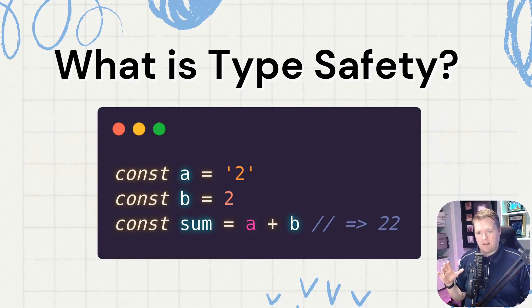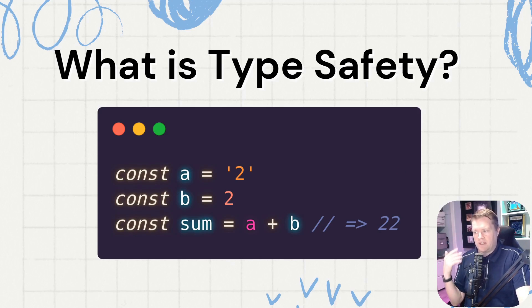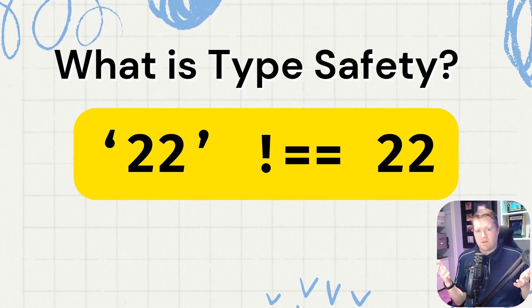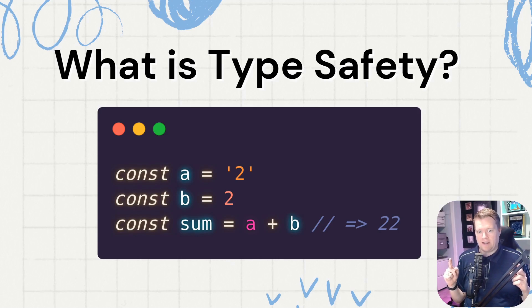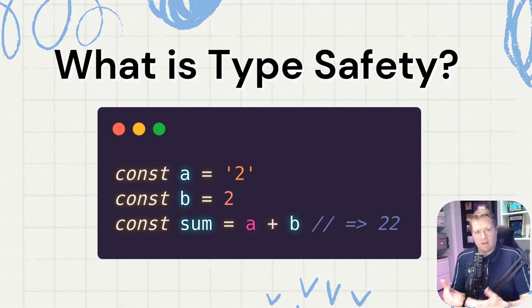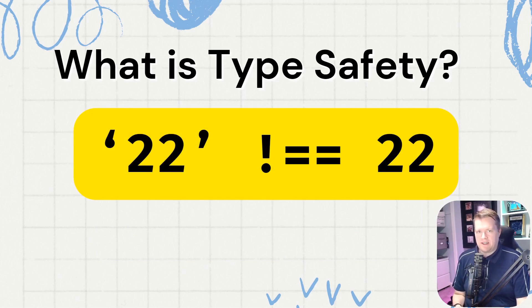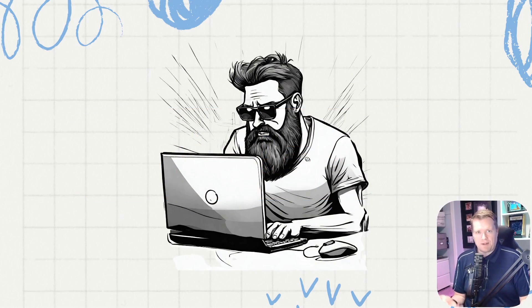Let me show you a straightforward example. Say we have const a equals a string '2', and const b equals a number 2, and we use a plus b. Normally 2 plus 2 is 4, but here we get '22', which doesn't make sense. What's happening is type coercion — the string '2' and number 2 get concatenated, giving you the string '22'. We'd probably expect either 4 or an error. This is what I look like when I have this problem — I wish my editor or compiler would catch it beforehand.